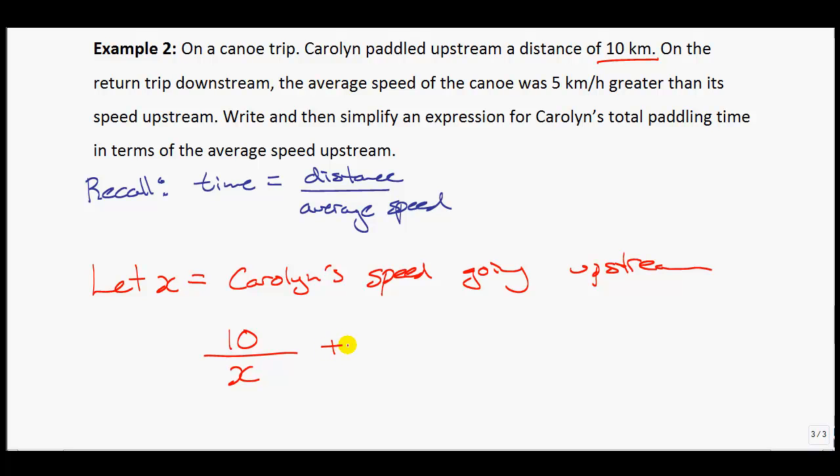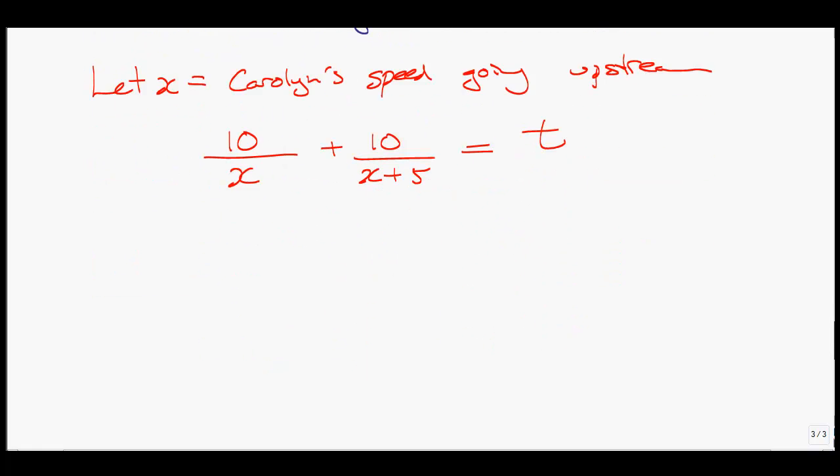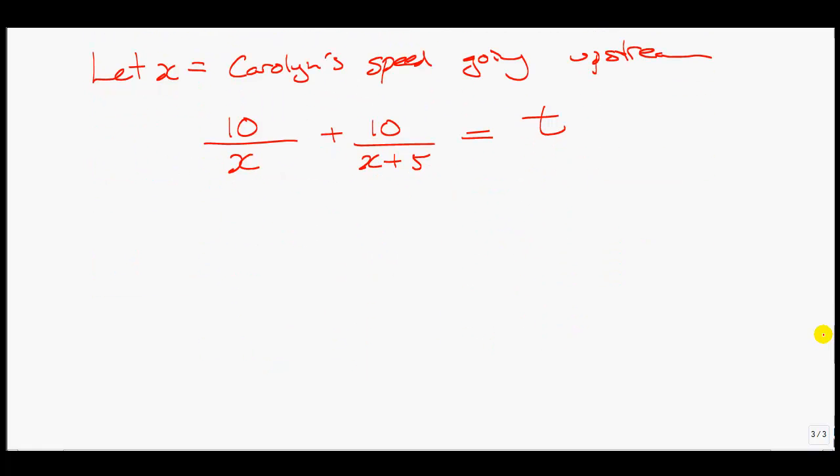Now I'm going to add that to, because they ask what is the total paddling time, and I have to deal with what her time is going in the other direction. When she now goes downstream, she's still going 10 kilometers. Only here it says she's going 5 kilometers greater. So I'm going to write this now as x plus 5. And this will be equal to her total time we'll just have as t. That's all we need to do. Now I'm just going to go and simplify this expression.